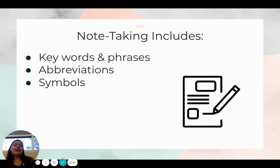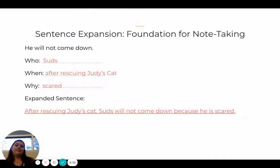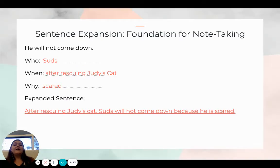Note-taking includes three pieces: keywords and phrases, abbreviations, and symbols. Some of these our students may be a little bit more familiar with, but I encourage us to create some sort of norms in our classroom and across our whole school that we use for note-taking. Sentence expansion, which we talked about last time, is the foundation for note-taking. So let's say we give students this sentence: 'He will not come down.' Who is this sentence about? When? And why?